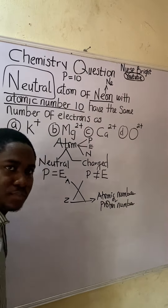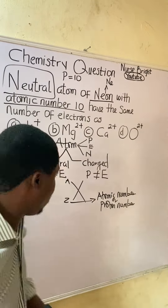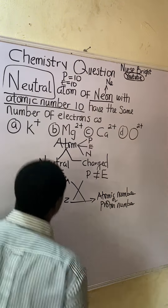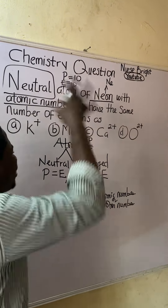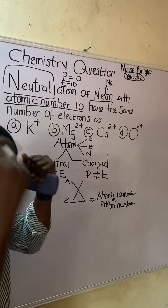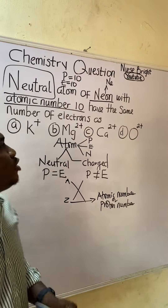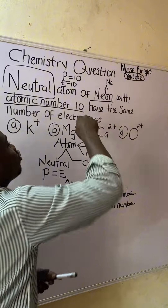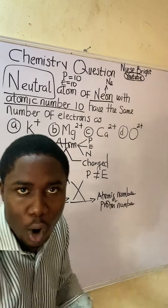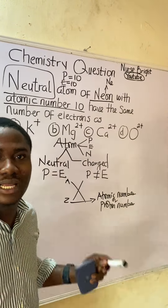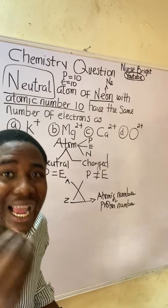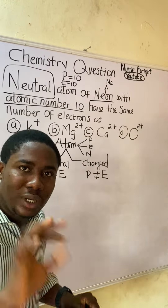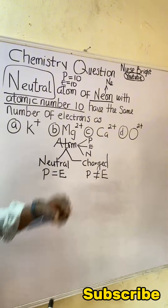For a neutral atom of neon, proton and electron numbers are the same, so the electron number is also 10. The question is asking: which of the given options also has 10 electrons — the same as neon? We have to check each option.